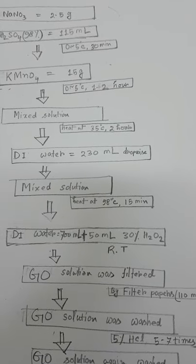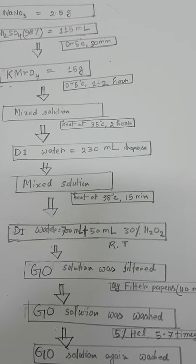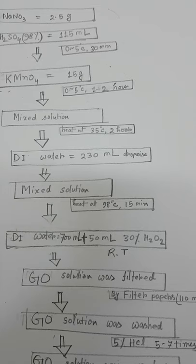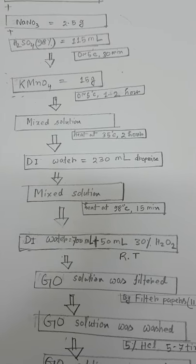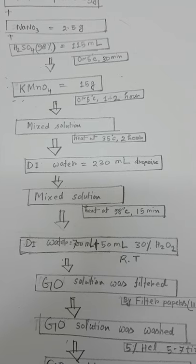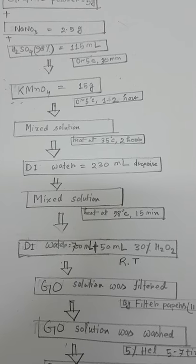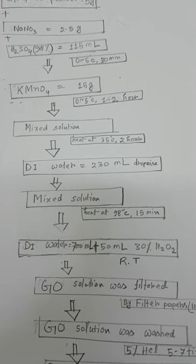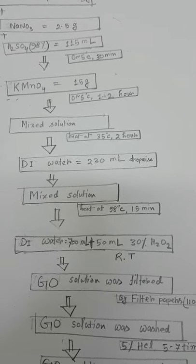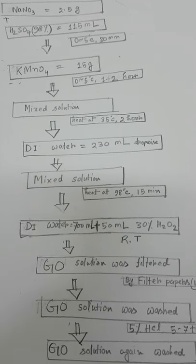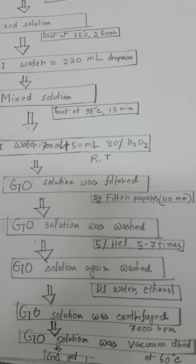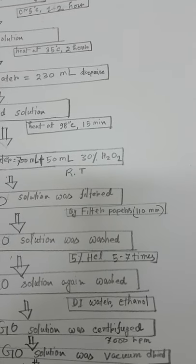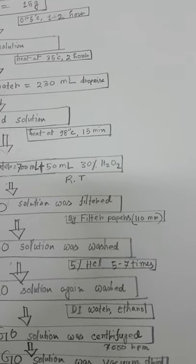After that, this mixed precursor solution has remaining sulfate ions and manganese ions, so we have to remove them. To remove it, we use filtration with filter paper. The pore size was 110 millimeters.